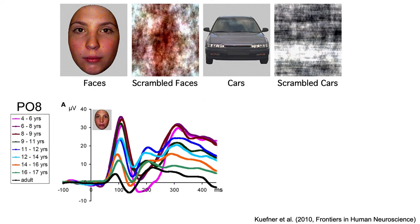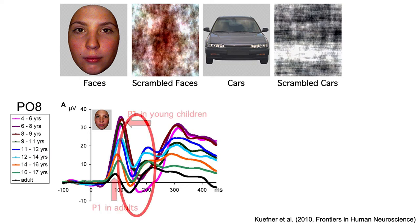Here are the ERP waveforms they recorded to faces over right occipitotemporal cortex. As you can see, there were huge differences across ages in the P1 wave, with a much larger P1 in younger children and the smallest P1 in adults. Children typically have larger ERPs than adults, a result of several factors including a greater number of synapses and thinner skulls in children. Kufner et al. also found a complex set of changes in the N170 latency range, with latencies tending to be earlier in older subjects, likely reflecting increased myelination.